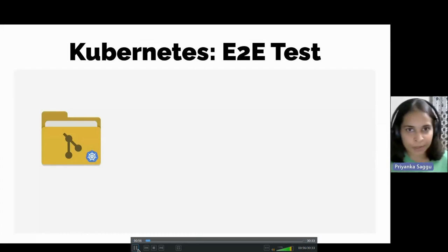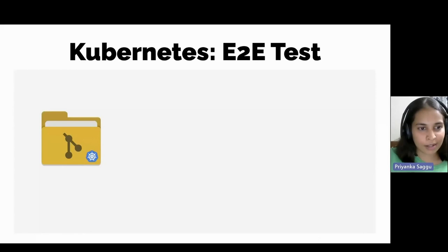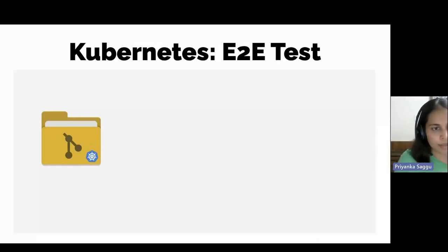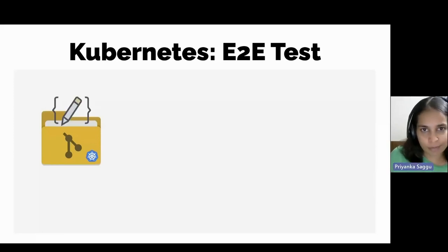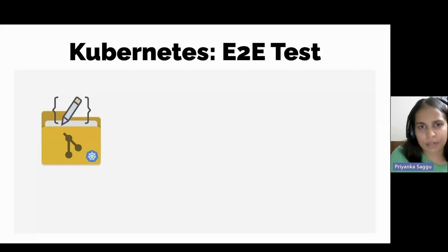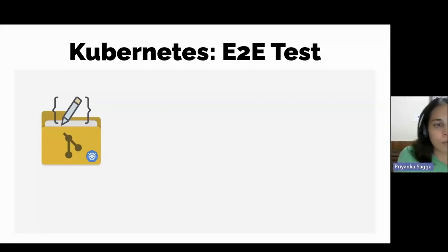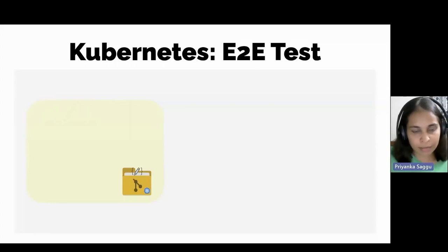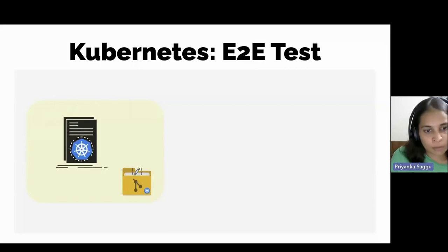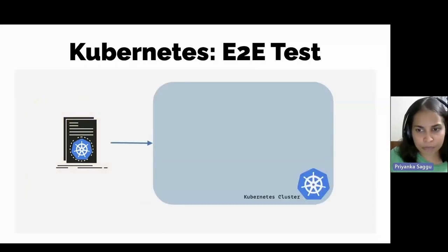Before we get started with the main portion of the talk — which is talking about the kubetest2 tool and how to expand it — I want to first discuss what Kubernetes end-to-end testing actually looks like. In the upstream Kubernetes project, we use GitHub to maintain our source code. The source code of the entire Kubernetes project and its sub-projects sits inside various different GitHub repositories.